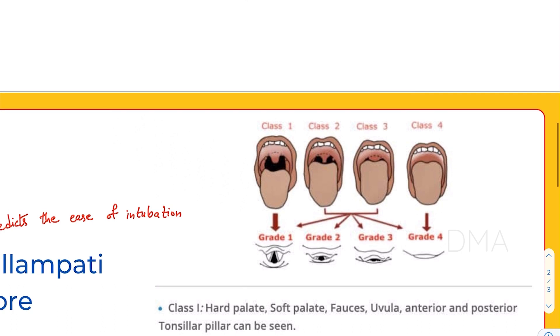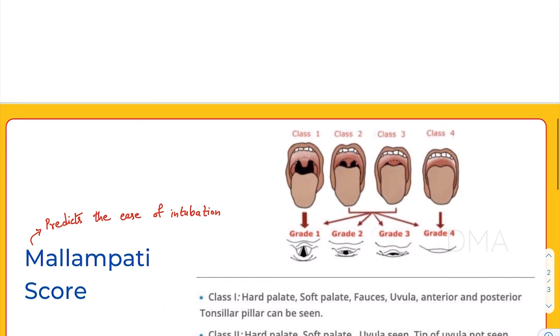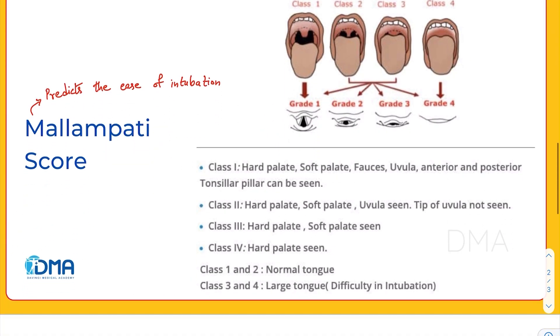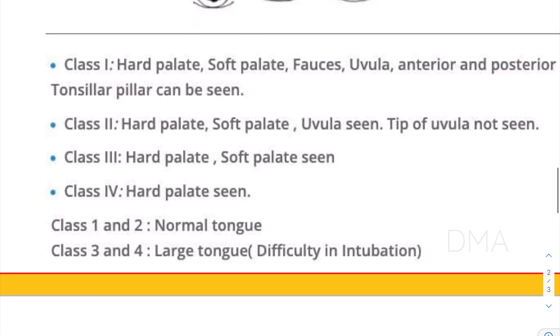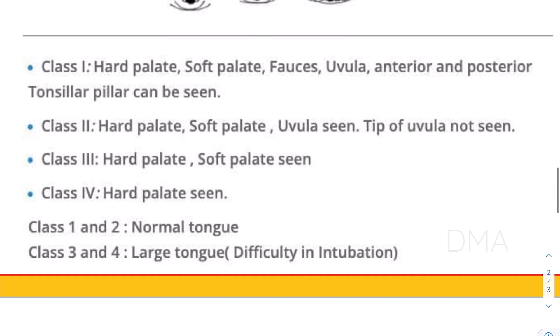As you can see, there are four different classes or four different scores that we assign. Let's look at them one by one. Firstly, we give class one.